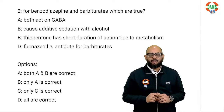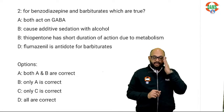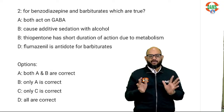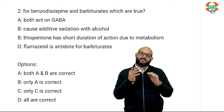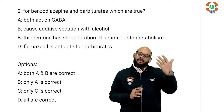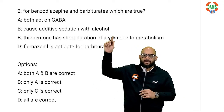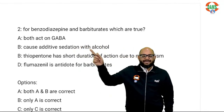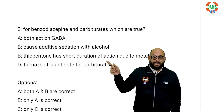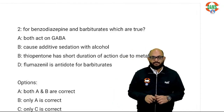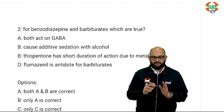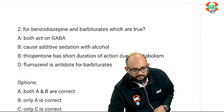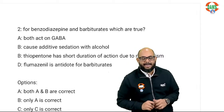Now this is the recall for the second question, regarding benzodiazepines and barbiturates. I'm not entirely sure all the options recalled are exactly the same, but this is the gist — and it is again a repeat of what was already asked in INI last year regarding thiopentone. This time the question was: if there is a benzodiazepine and barbiturate, what is true? The options were: they both act on GABA; they cause additive sedation with alcohol; thiopentone has short action due to metabolism; and flumazenil is an antidote for barbiturate.